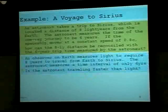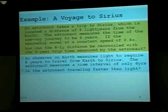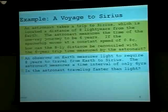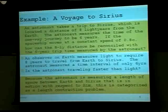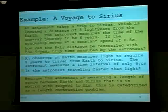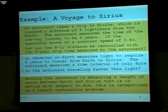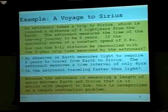An observer on Earth might require 8 years to travel from Earth to Sirius. The astronaut measures a time interval of only 6 years. Is the astronaut traveling faster than the speed of light? Well, because the astronaut is measuring the length of space between Earth and Sirius as moving with respect to him or her, this is categorized as a length contraction problem. The astronaut is moving at some speed relativistically, but the length they're traveling — which is between Earth and Sirius — is also moving at that same speed in the direction with respect to the astronaut. So that length becomes contracted with respect to the astronaut themselves.